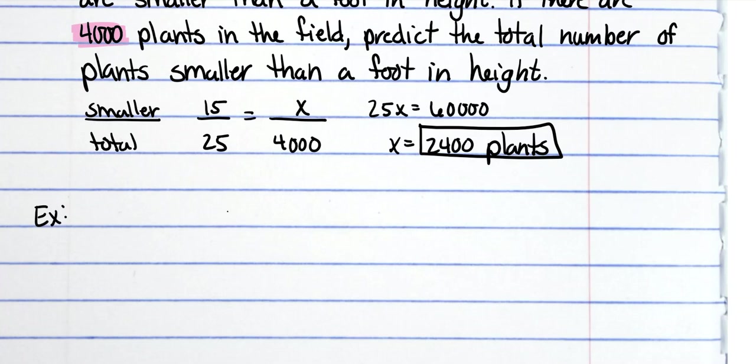And this one says Mayor Hernandez conducted a random survey of 200 voters and found that 135 approve of the job she is doing. If there are 48,000 voters in her town, predict the total number of voters who approve of the job she is doing.